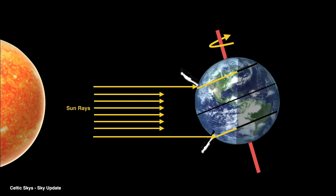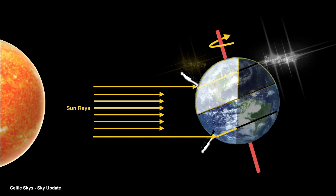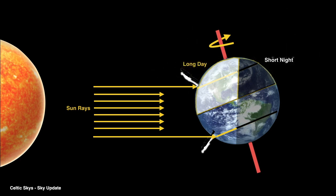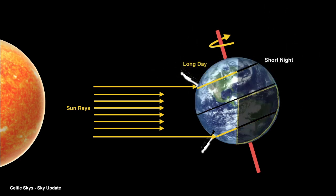However, as you can see, in the Northern Hemisphere, more time is spent in the light than in the dark. This means that the days are longer and the nights are shorter. Conversely, in the Southern Hemisphere, the nights are longer and the days are shorter.